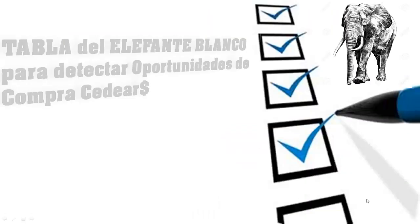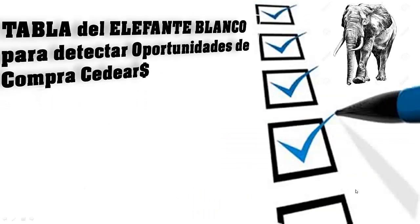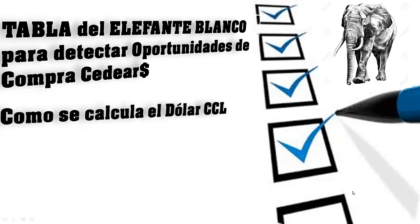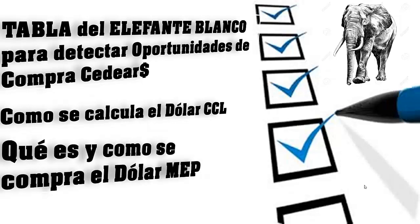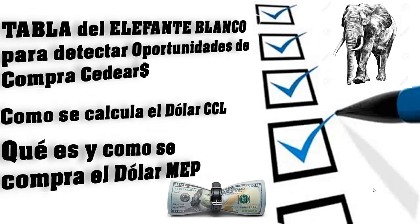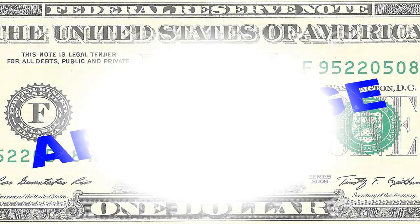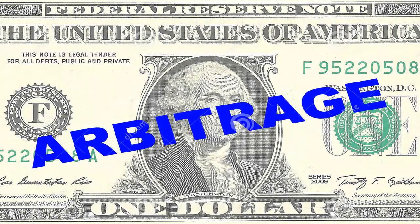Repasando entonces: hoy aprendiste cómo se interpreta la tabla del elefante blanco para detectar oportunidades de compra de CDRs, cómo se calcula el dólar contado con liquidación o implícito, qué es y cómo se compra el dólar MEP, cómo saltar el cepo, y por último, qué es un arbitraje.